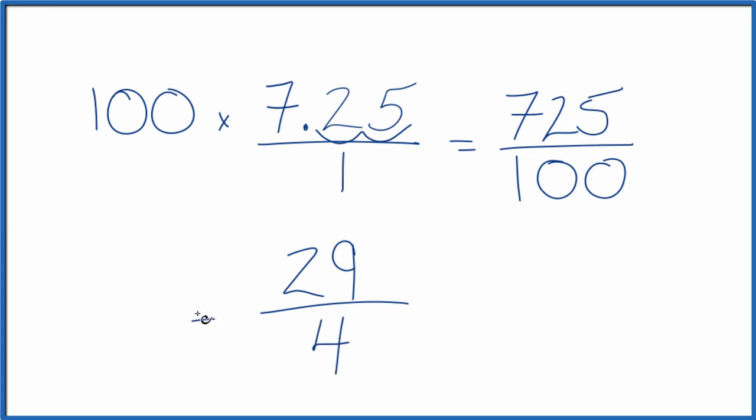So 7.25 equals the fraction 29 fourths. And this is an improper fraction because the numerator is larger than the denominator. We could change it to a mixed number as well.